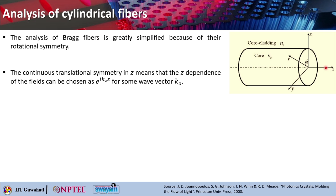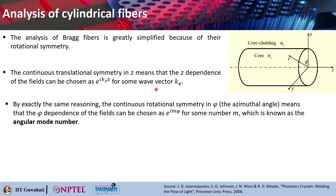It is rho-phi-z or r-phi-z. The continuous translational symmetry is along z, meaning the z dependence of the fields can be chosen as e^(ikz·z) for some wave vector k_z. By exactly the same reasoning, the continuous rotational symmetry in phi — which is the azimuthal angle — means that the phi dependence of the fields can be chosen as e^(imφ) for some number m, which is basically known as the angular mode number. Because phi also has a continuous rotational symmetry, m must be an integer because phi equals 0 and phi equals 2π are basically equivalent.